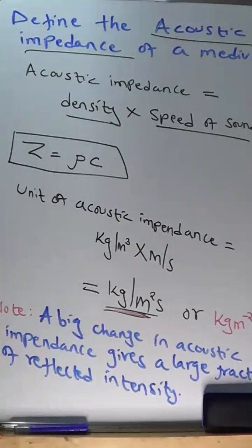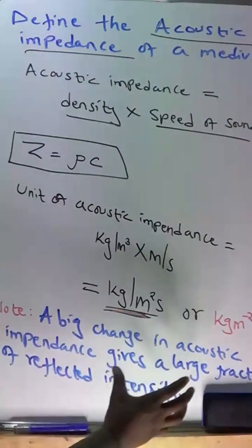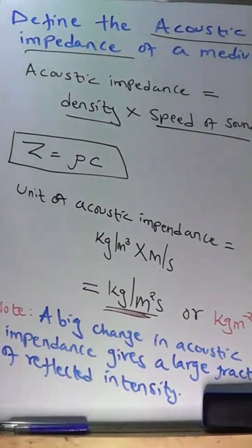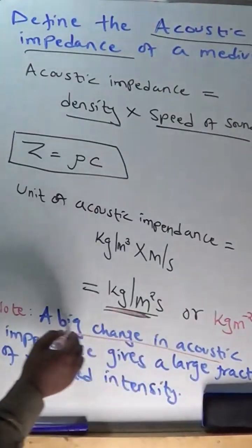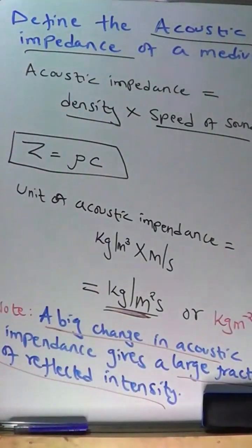Now another thing you need to introduce is that a peak change in acoustic impedance gives a large fraction of the reflected intensity. When we have a peak change in acoustic impedance, it also gives a large fraction of the reflected intensity.